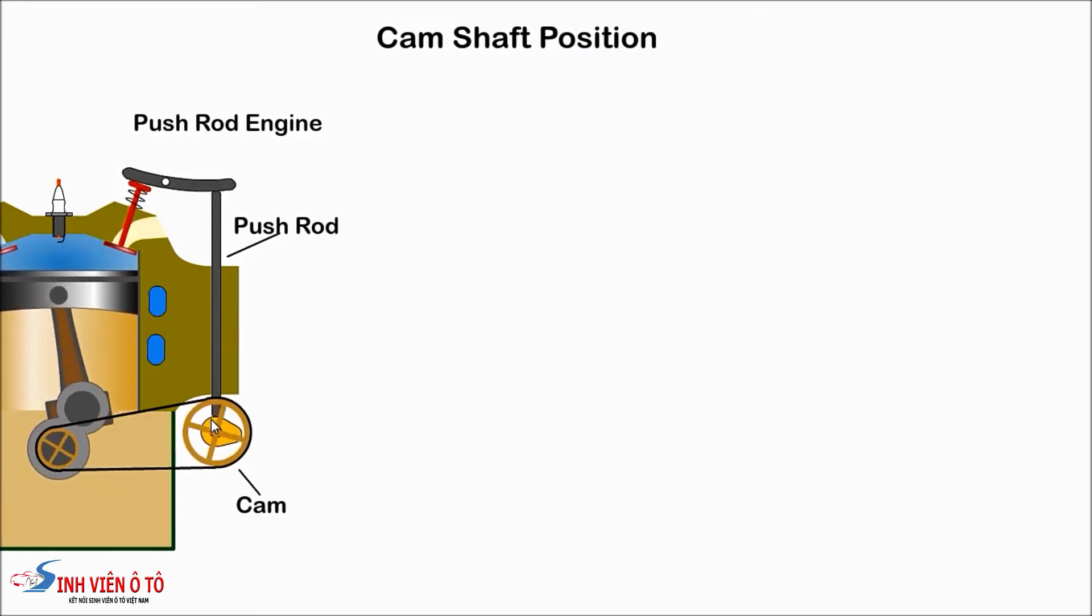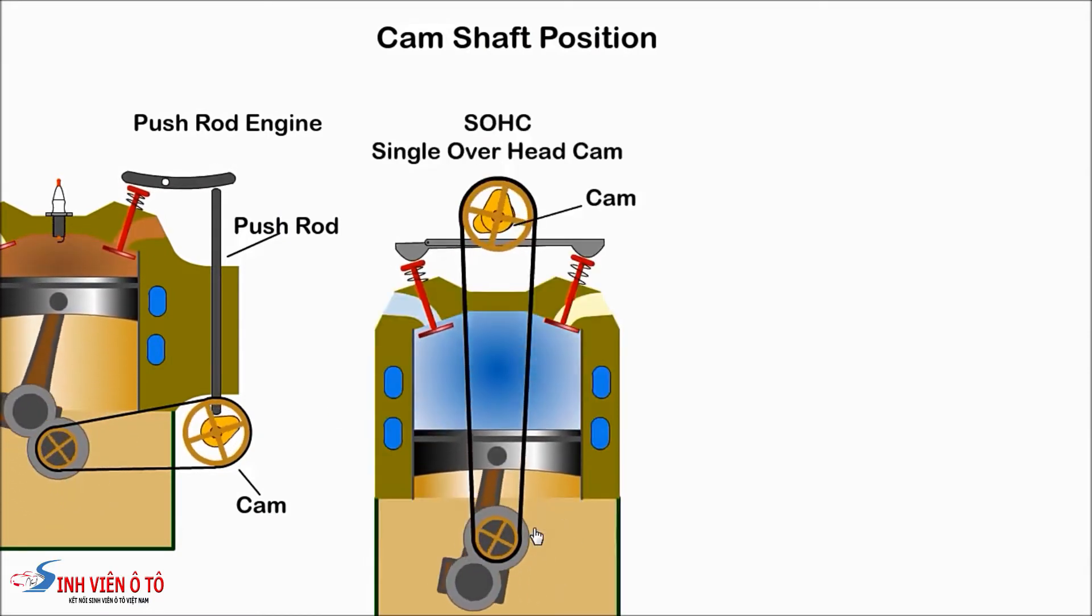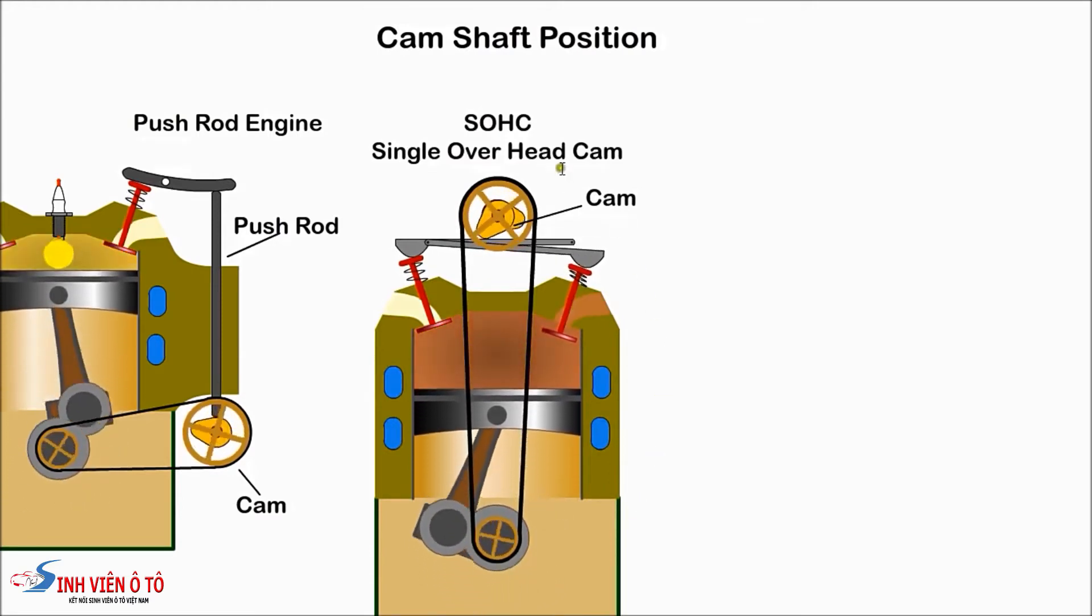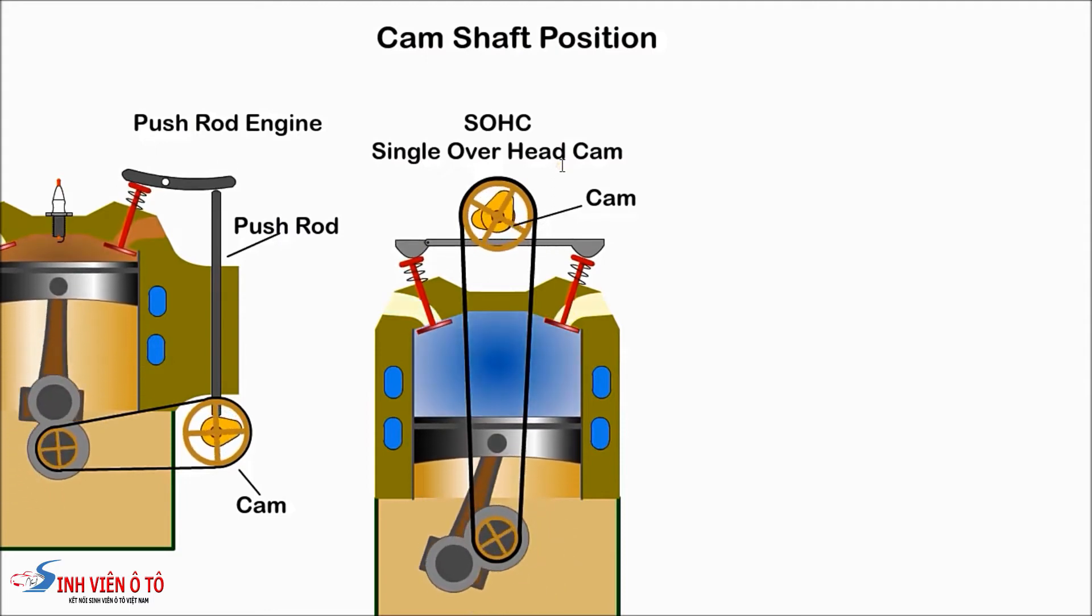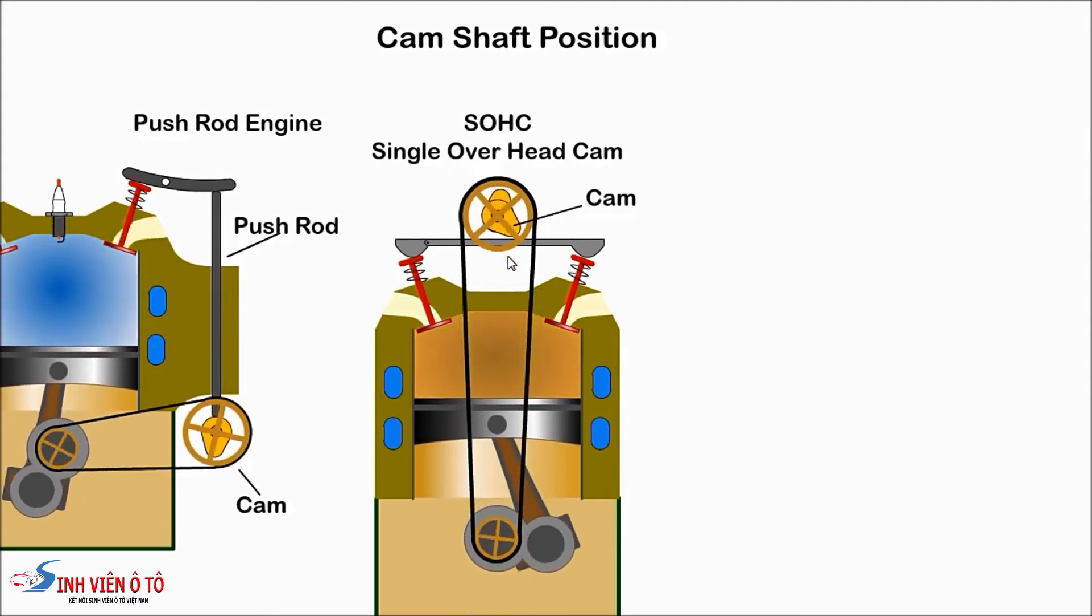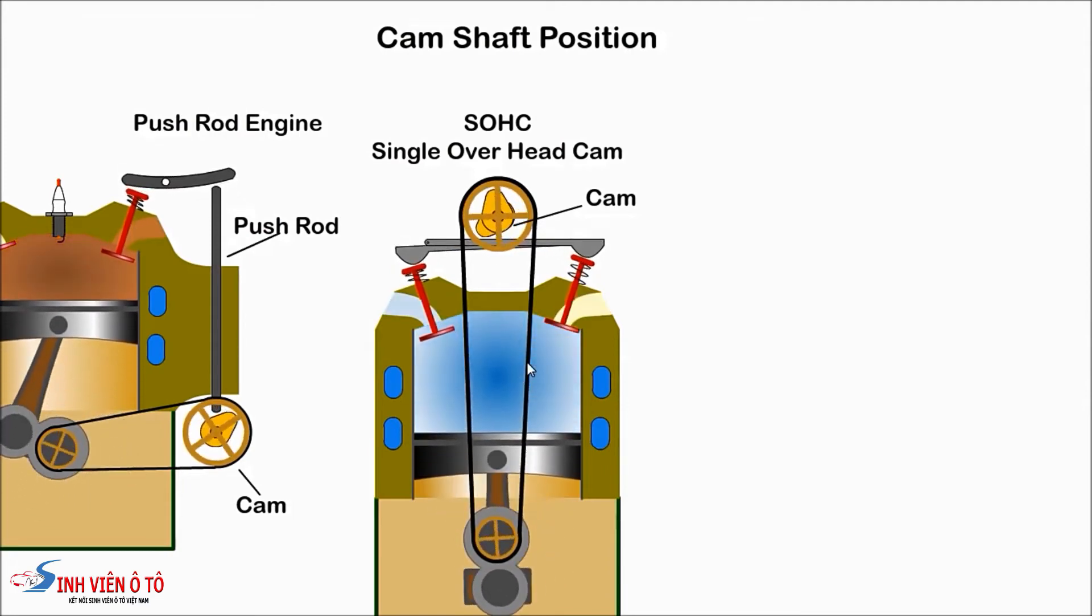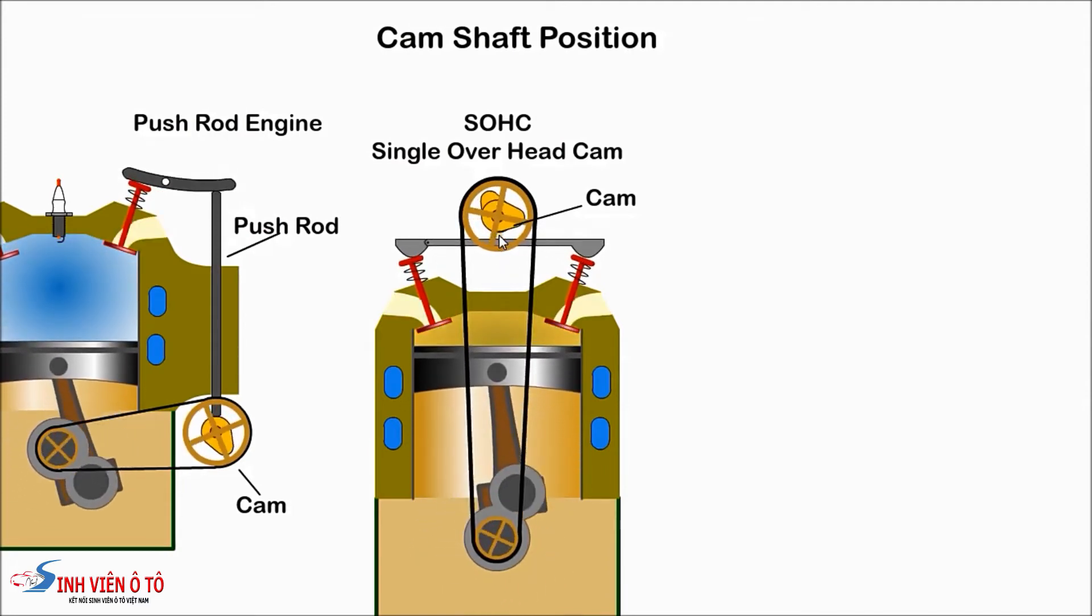SOHC, Single Overhead Cam: in this design the camshaft was relocated to the top of the engine and driven by a timing chain or belt. One camshaft was used to operate both the inlet and exhaust valves via rocker arms.